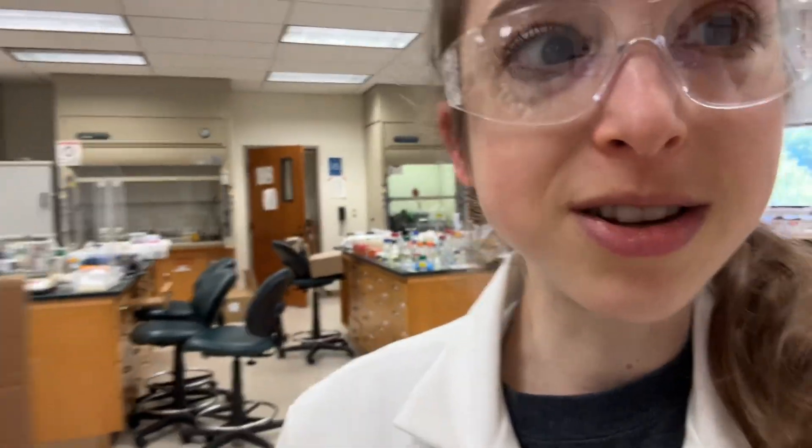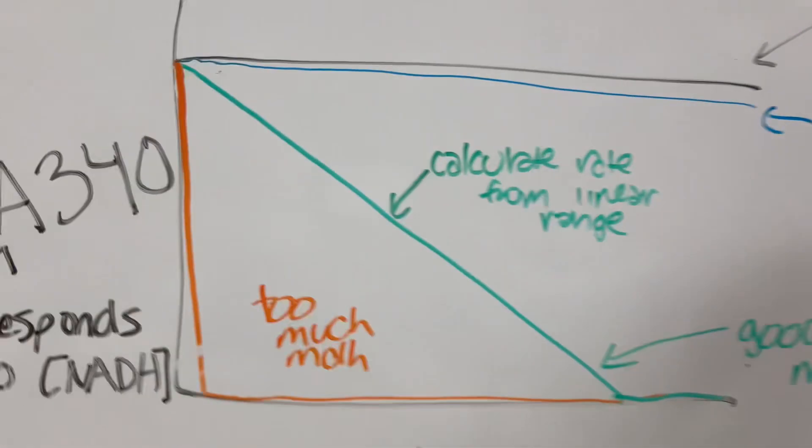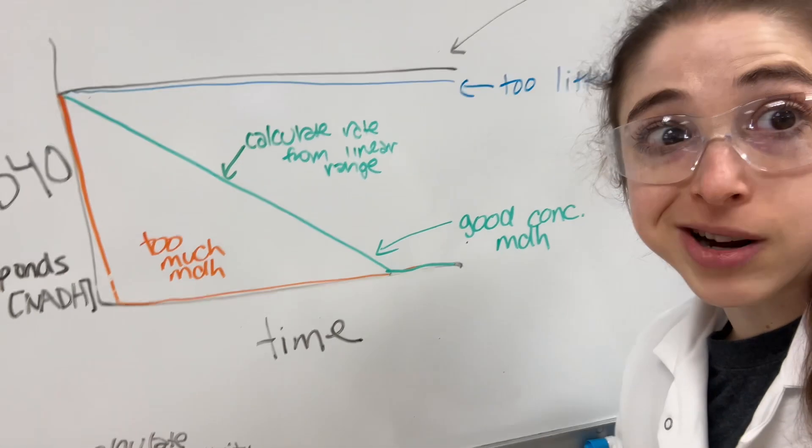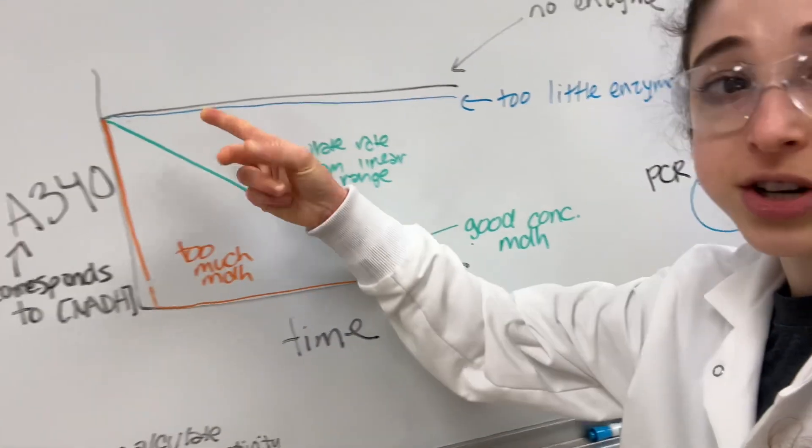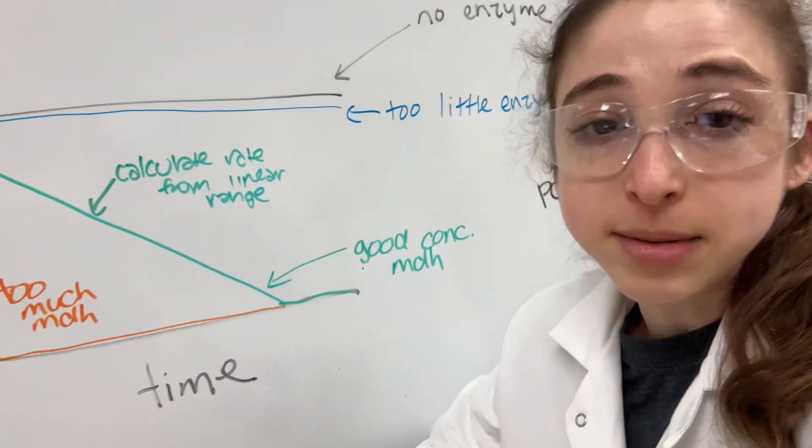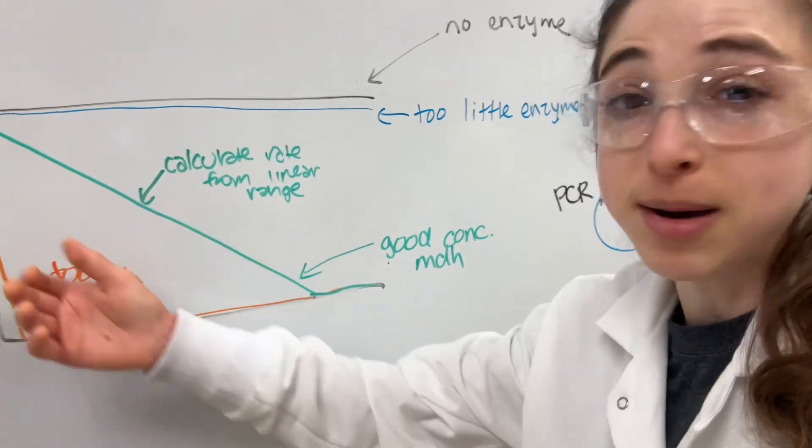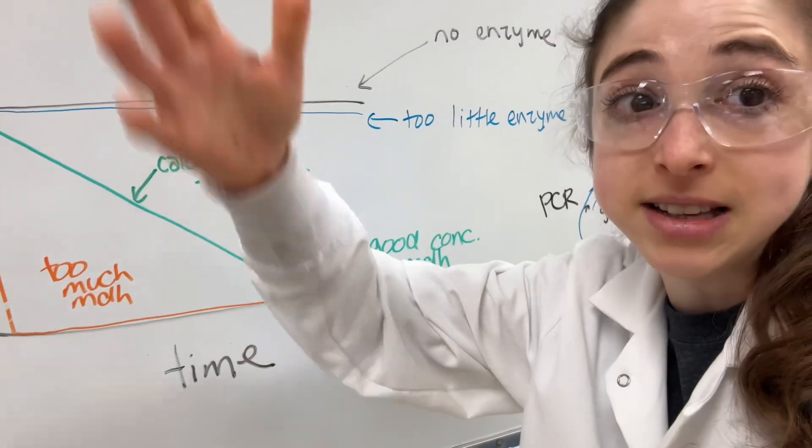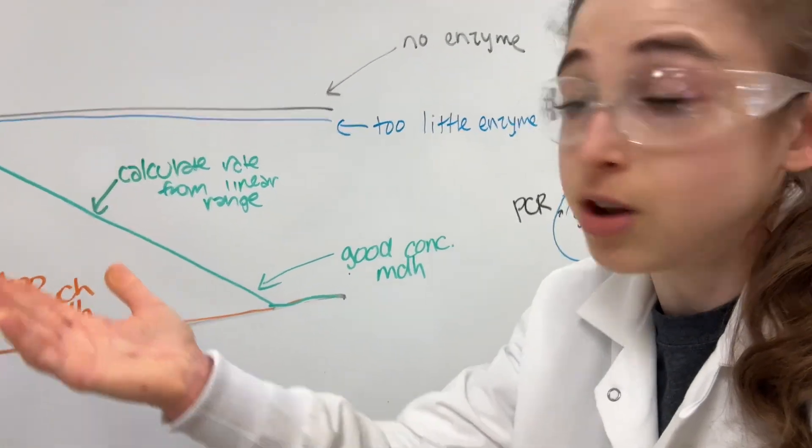Now, in order to calculate the slope, you need to actually have a nice linear region. Because you want to calculate the slope with a linear region, not the region where it plateaus because it starts running out of stuff. It uses all the NADH up.